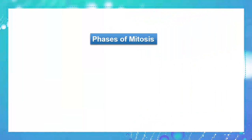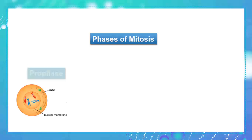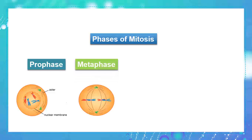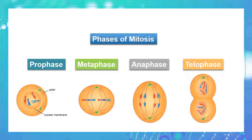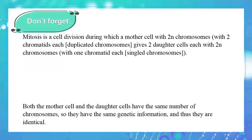To sum up, in this video you've learned about the phases of mitosis: prophase, where the nuclear membrane disintegrates, chromosomes condense, and asters and spindle fibers start to form; metaphase, where chromosomes line up on the equatorial plate; anaphase, where sister chromatids separate; and telophase, where everything returns to its original state. Both mother and daughter cells have the same chromosomal number, 2N.